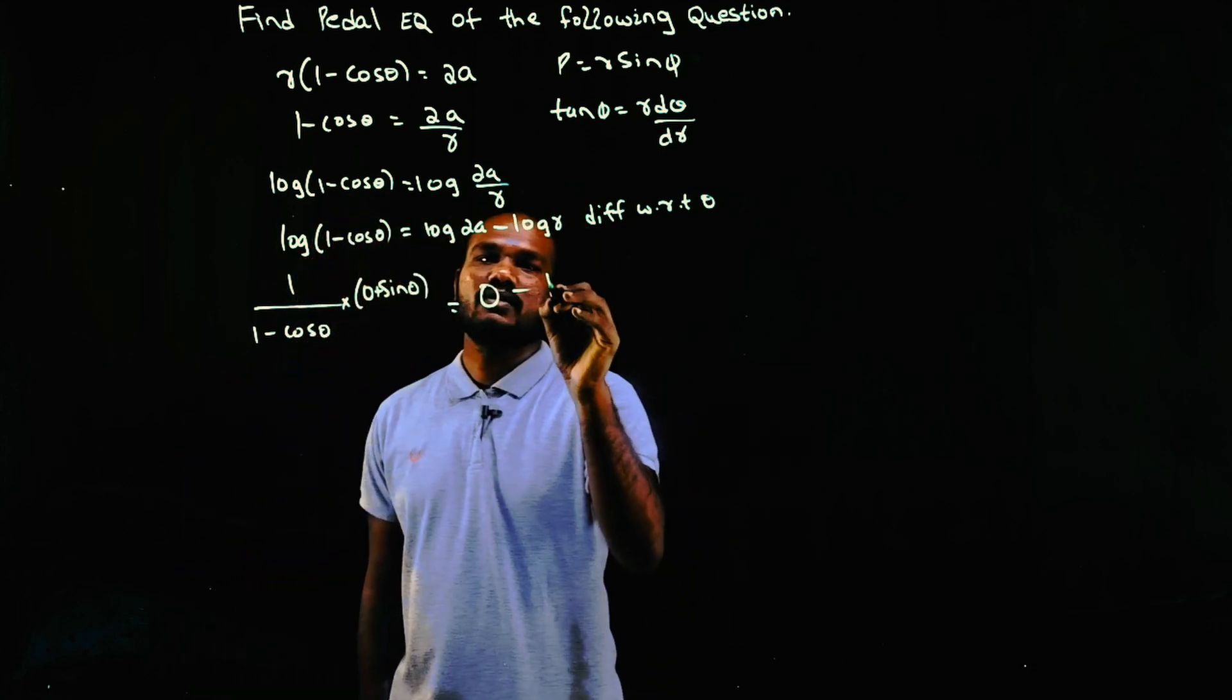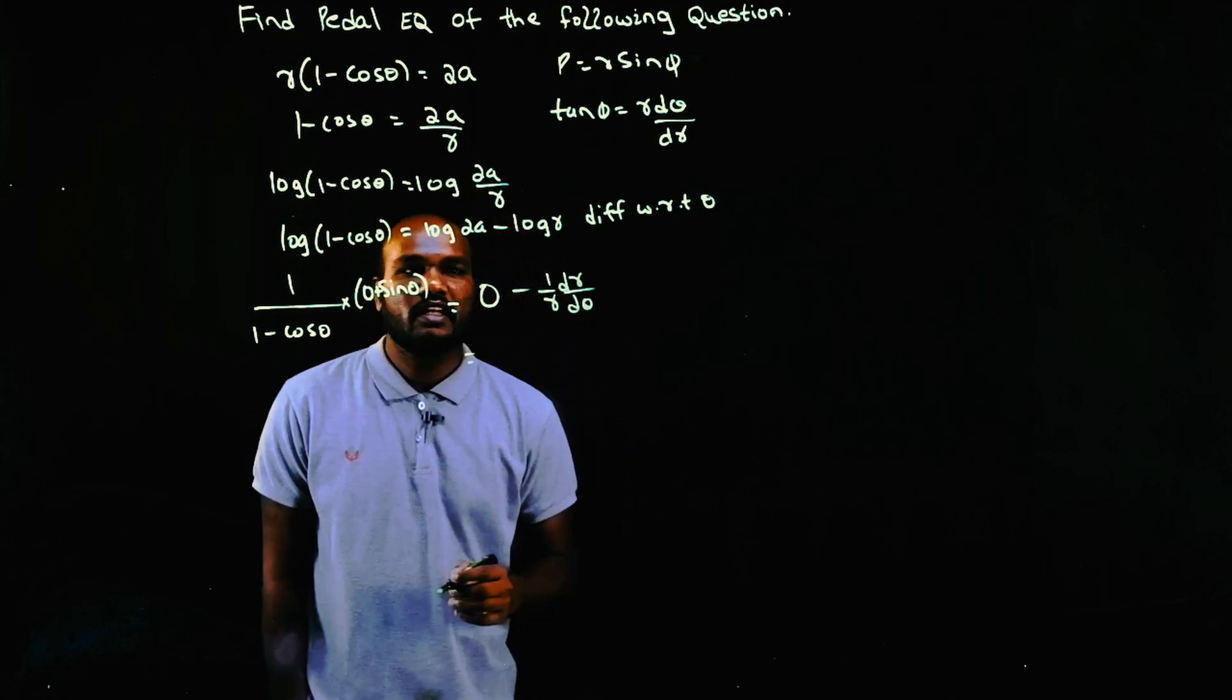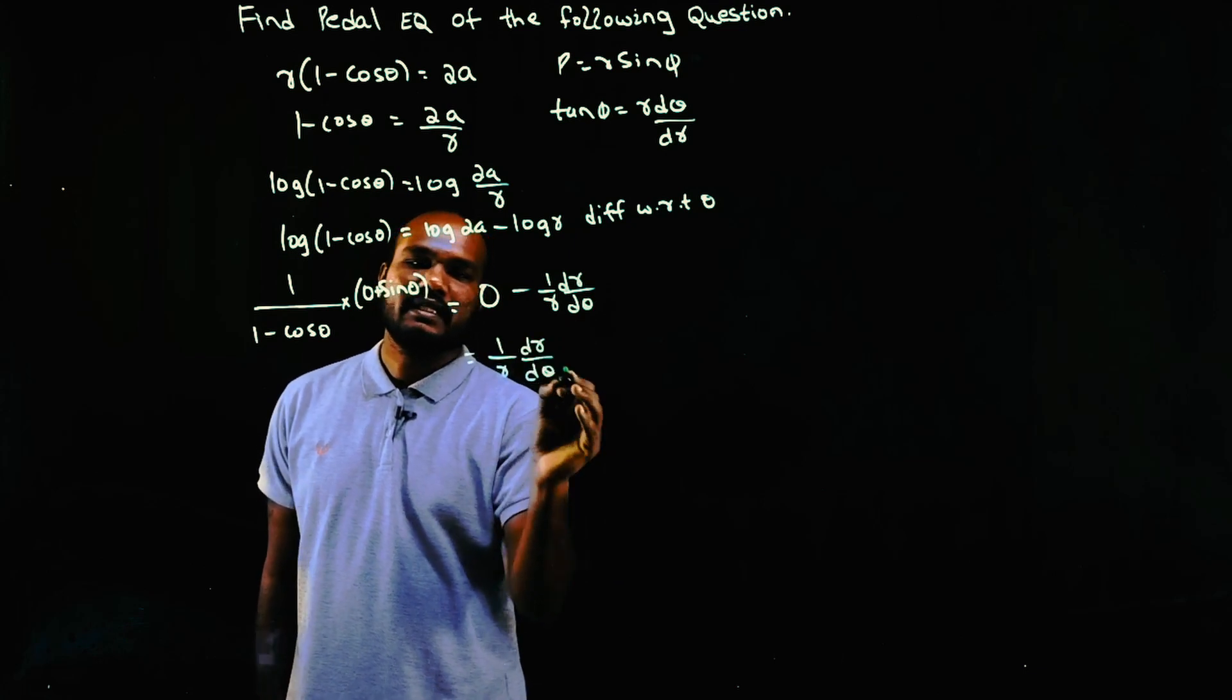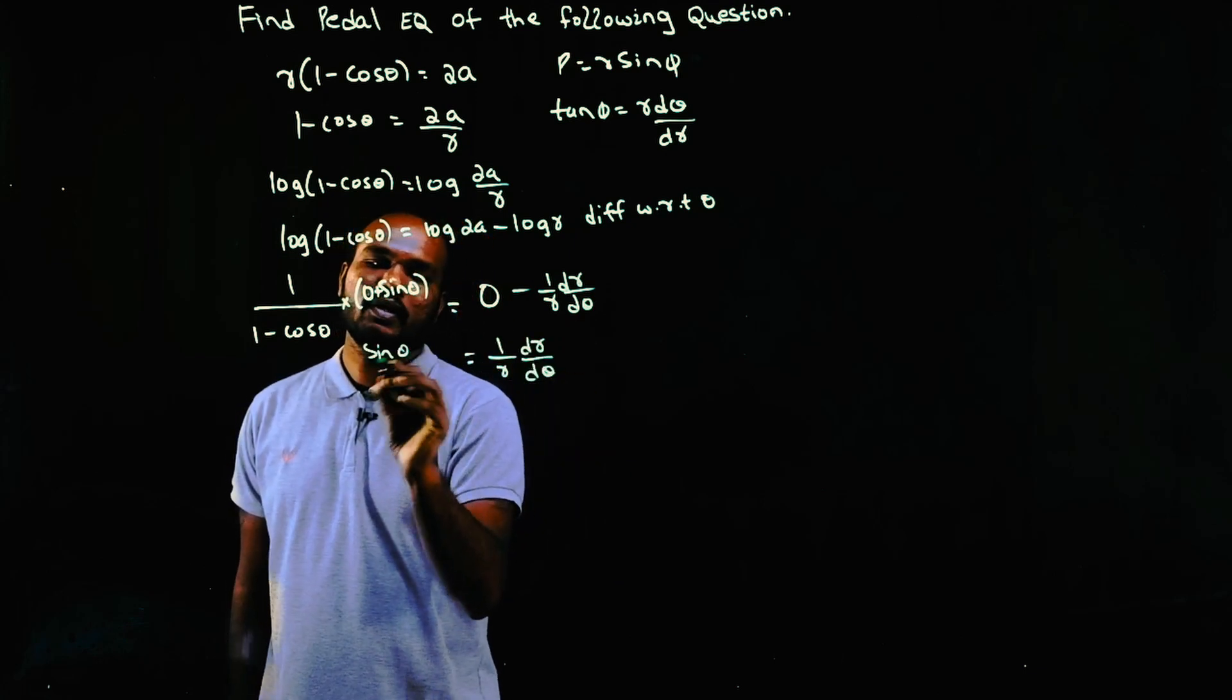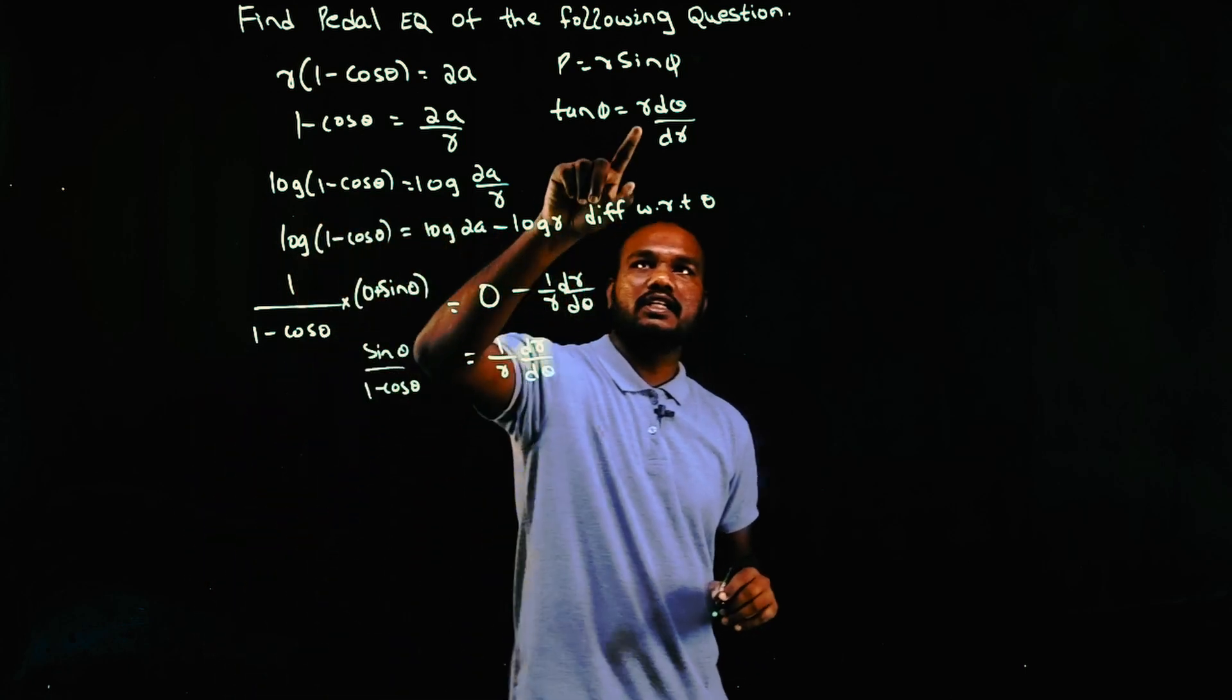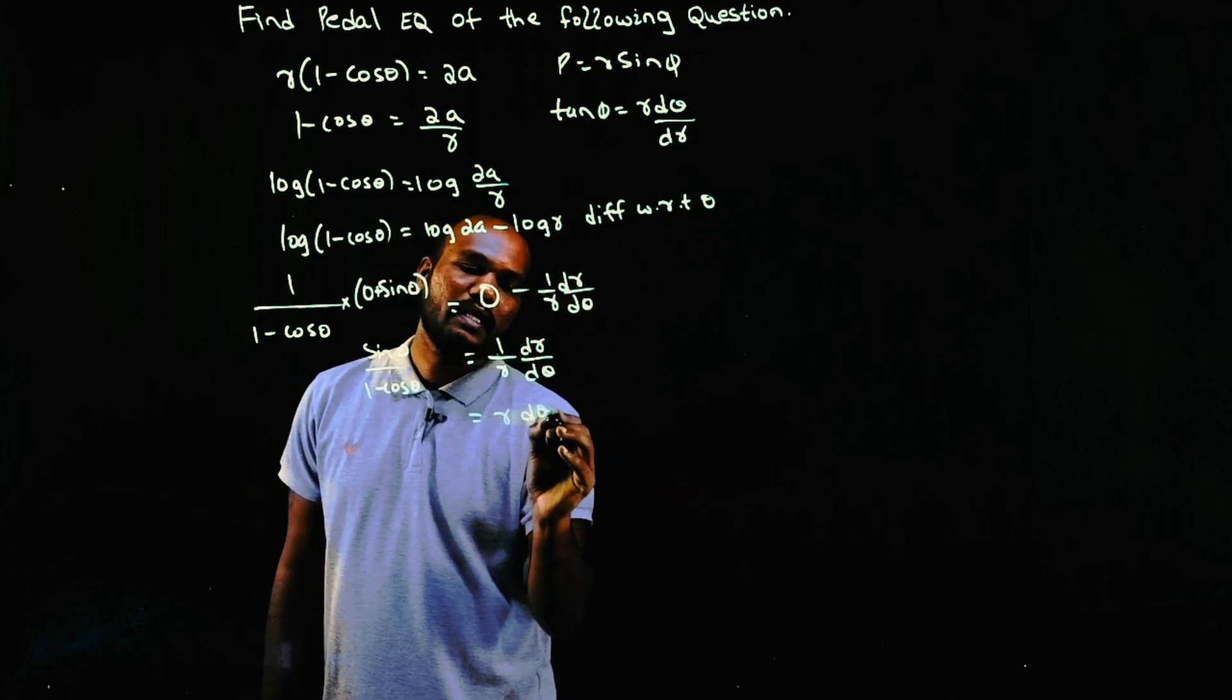So what I am left with is (1/r)(dr/dθ) = sin θ/(1 - cos θ). But I am not interested in 1/r, I need r in the numerator, so just flip it: r dθ/dr = (1 - cos θ)/sin θ.